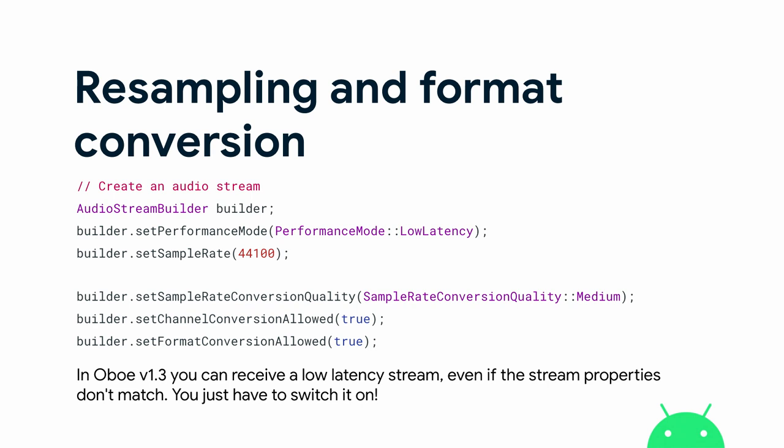A question asked to me yesterday was: why don't you switch on sample rate conversion by default? The reason is because there is some computational overhead, which is why we leave it up to you to switch it on if you want to use it.